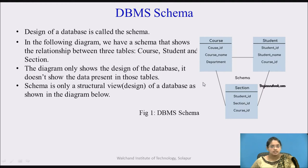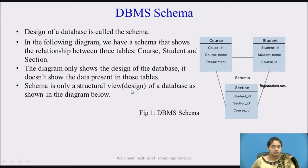You can see there are three tables: the course table, student table, and the section. All three tables are interconnected with each other. Database schema is also called a blueprint. It only shows the design of the database; it doesn't show the data present in those tables.